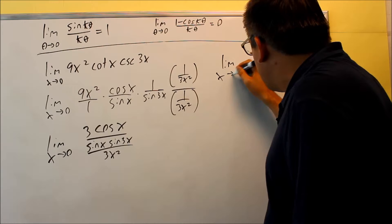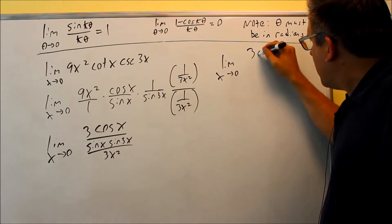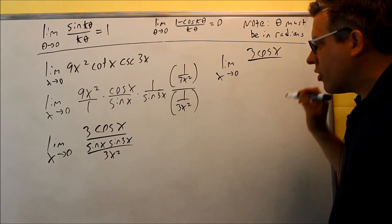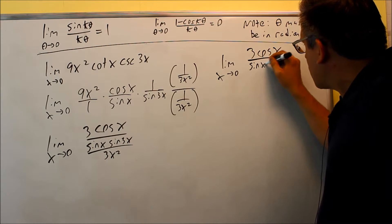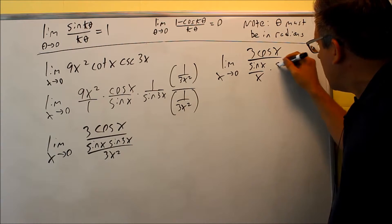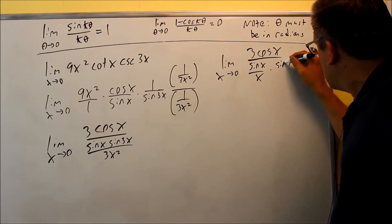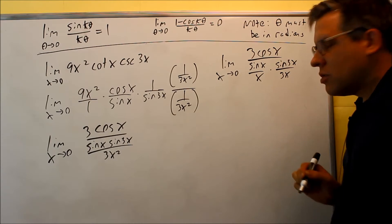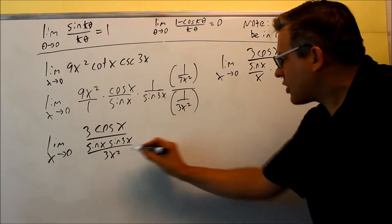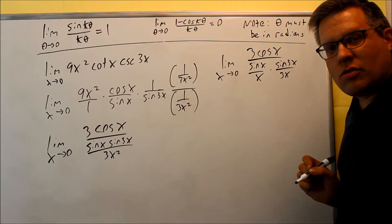So that's what we'll do over here. I'm going to do limit x approaches 0. We're going to do 3 cosine x over. I'm going to write it this way. Sine of x over x and then sine of 3x over 3x. Okay so I'm splitting up the 3x squared into these two things.